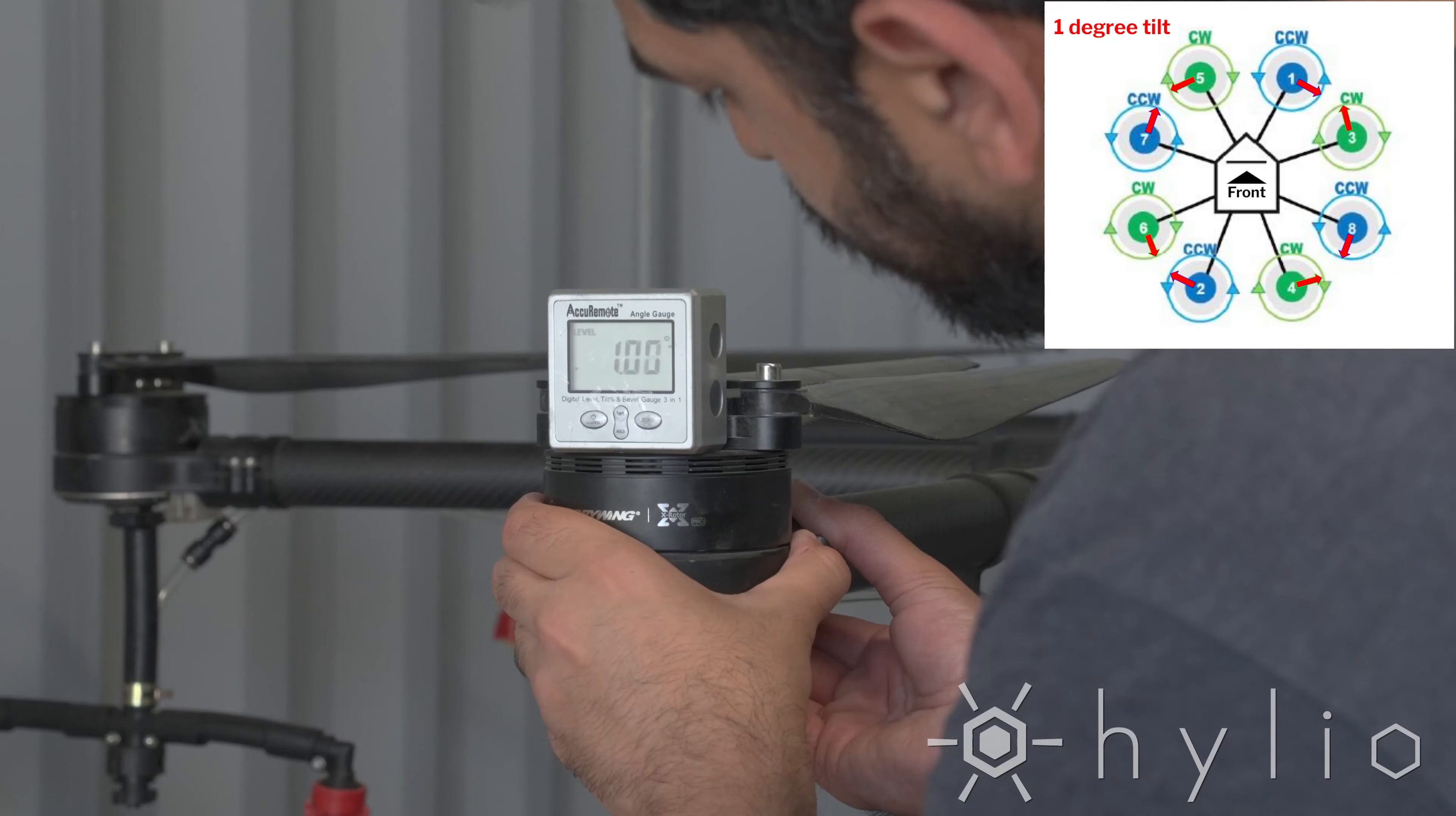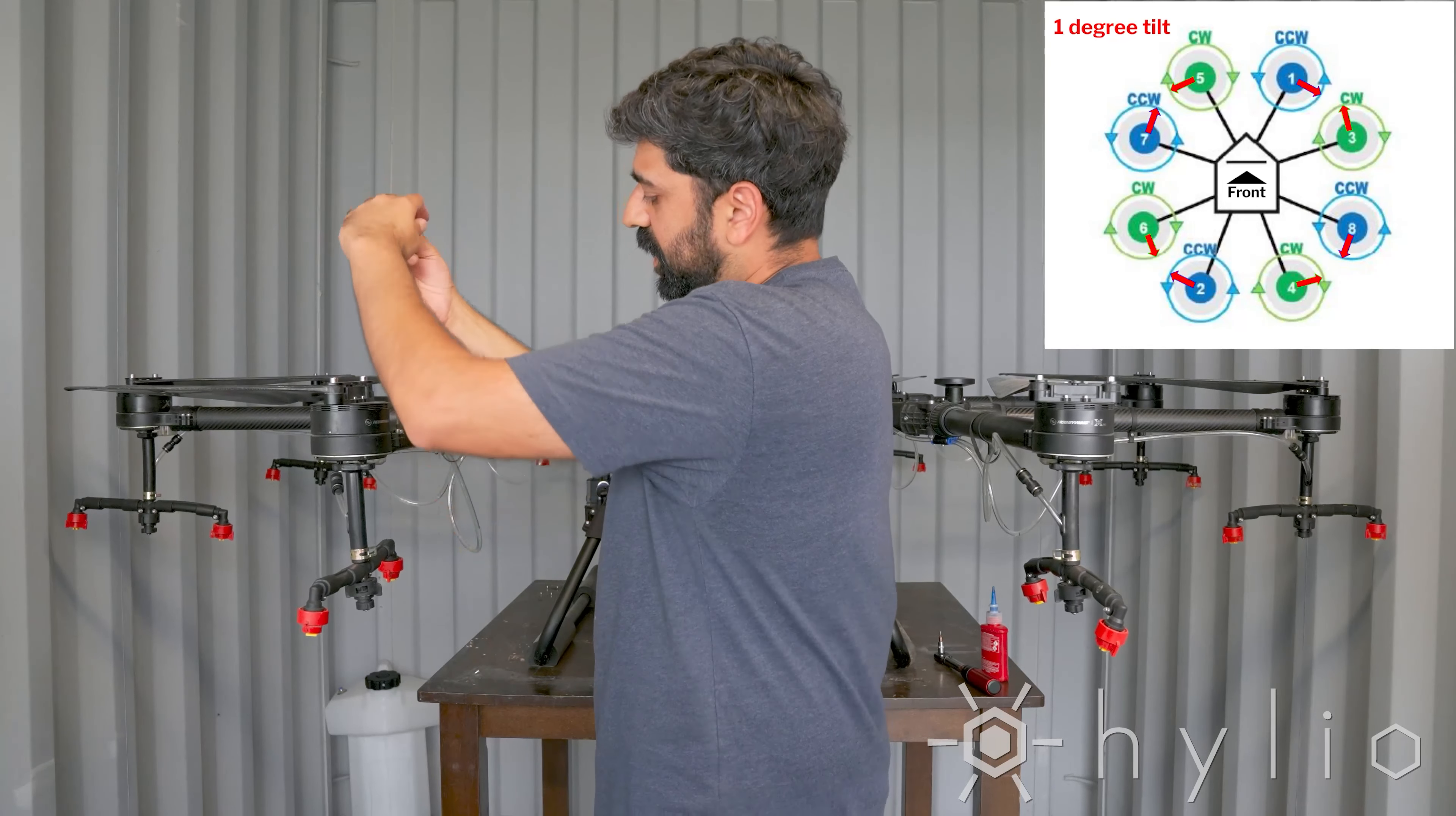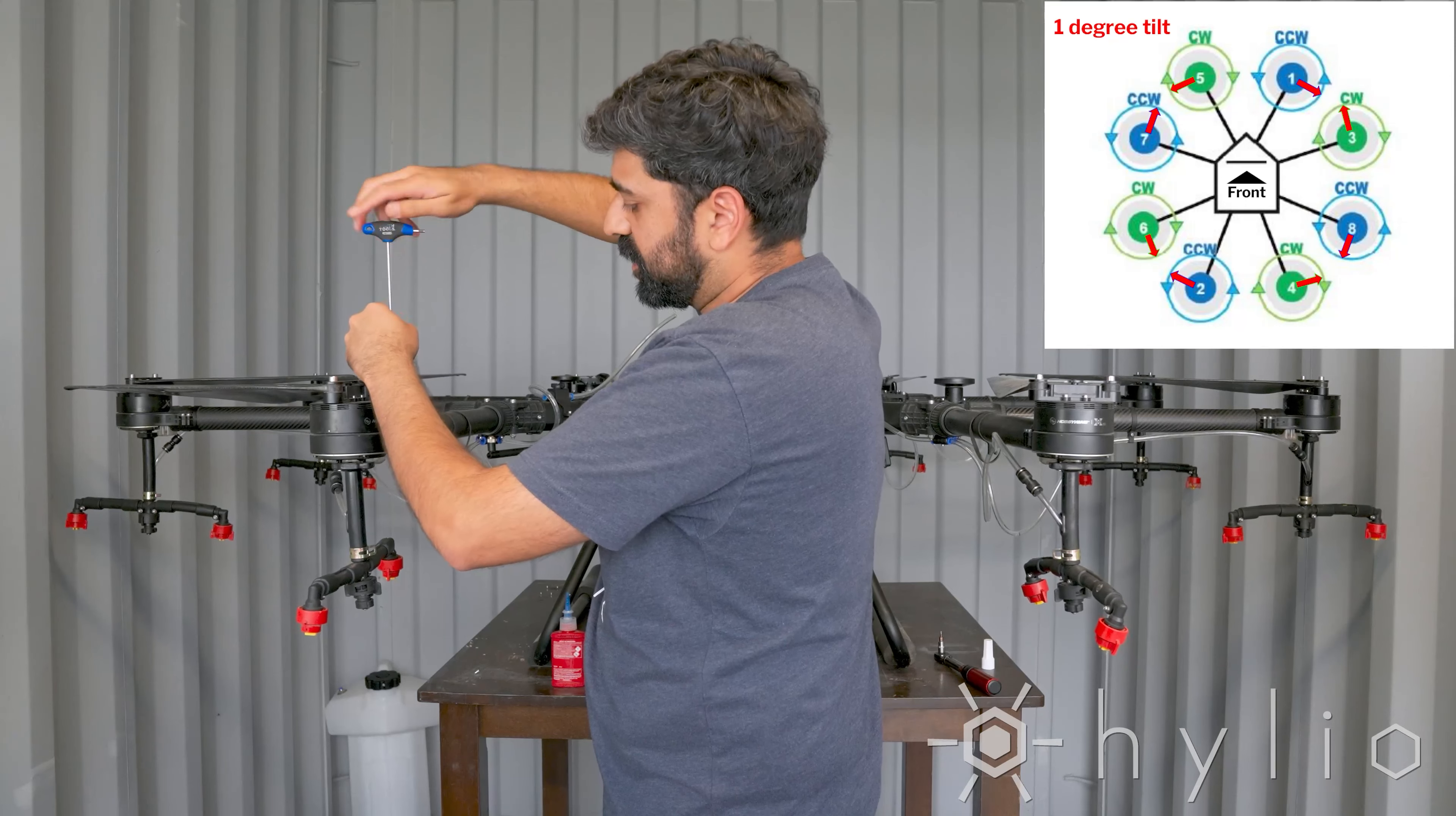Remove the level and now you can loctite the screws. I recommend removing them one at a time. Unscrew, take the screw out, apply blue loctite, and run it back in. Repeat this procedure in a crisscross pattern until you have applied blue loctite to all four screws.